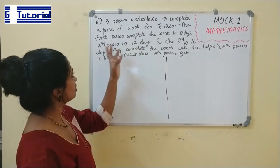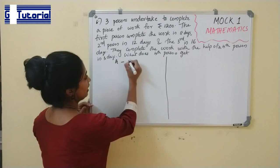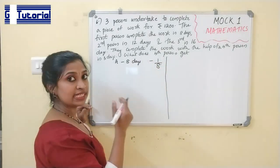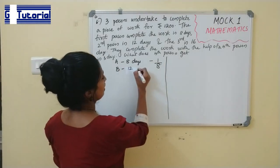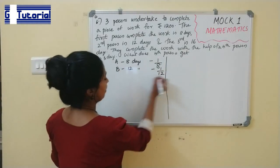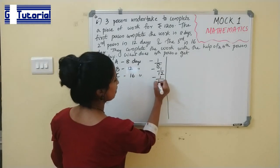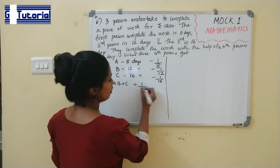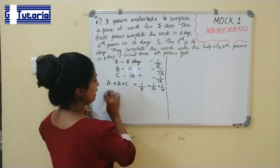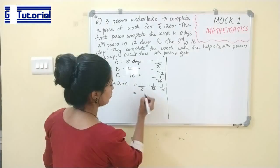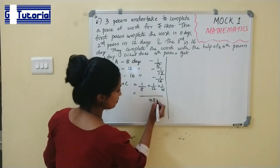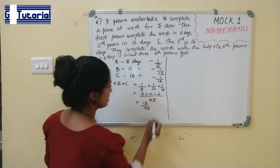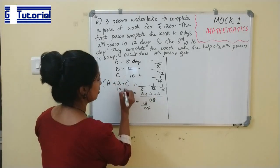Let the persons be A, B, C, and D. A's 1 day's work = 1/8. B's 1 day's work = 1/12. C's 1 day's work = 1/16. The LCM of 8, 12, and 16 is 48. So A + B + C's combined 1 day's work = 6/48 + 4/48 + 3/48 = 13/48.